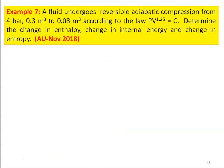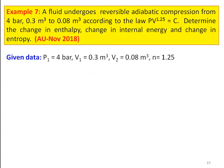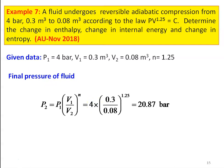We take example 7. A fluid undergoes reversible adiabatic compression from 4 bar, 0.3 m³ to 0.08 m³ according to the law PV^1.25 = constant. Determine the change in enthalpy, change in internal energy, and change in entropy of the compression process. This is from the Anna University question paper, November 2018. Given: P1 = 4 bar, V1 = 0.3 m³, V2 = 0.08 m³, polytropic index n = 1.25. Final pressure: P2 = P1 × (V1/V2)^n = 4 × (0.3/0.08)^1.25 = 20.87 bar. Change in entropy for an adiabatic process = 0.